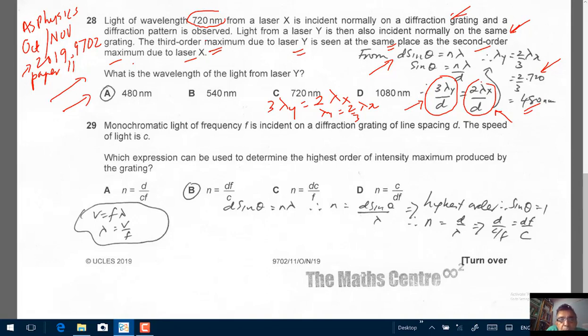29. Monochromatic light of frequency F is incident on a diffraction grating of line spacing D. The speed of light is C. Which expression can be used to determine the highest order of intensity maximum produced by the grating? Let's read the question again. Which expression can be used to determine the highest order of intensity maximum produced by the grating.